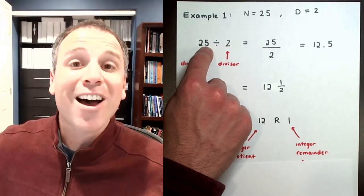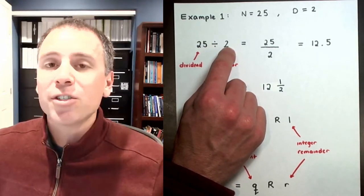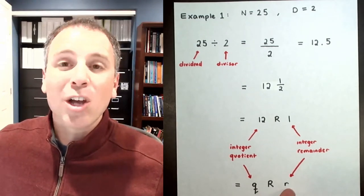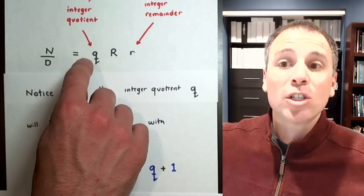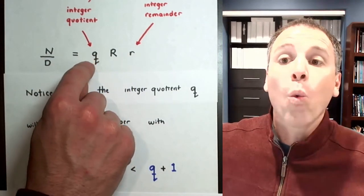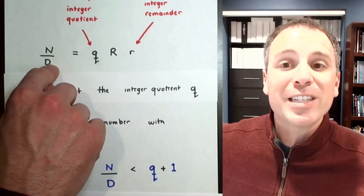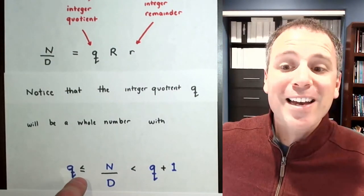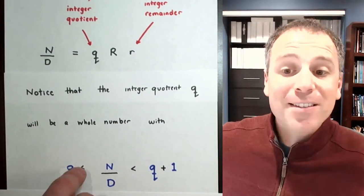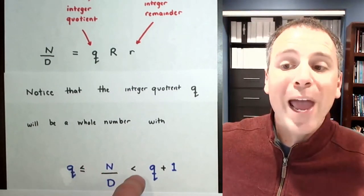This leads to a more general statement. Anytime we have an unsigned integer N divided by a non-zero unsigned integer D, we can always write that as Q remainder lowercase R, where Q is the integer quotient and R is the integer remainder. The integer quotient Q is special because it's the largest multiple of the denominator D that is still less than the numerator N. This means Q is always less than the ratio N divided by D, and N divided by D always falls between Q and Q plus one.